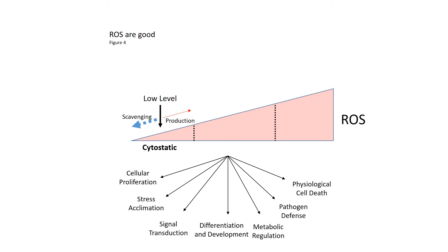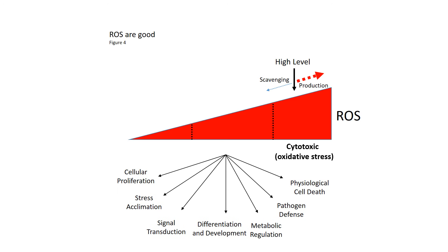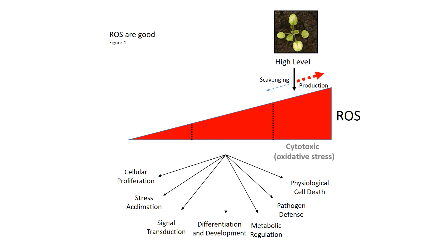If ROS levels are decreasing below a certain level, then due to the requirement of ROS for cellular proliferation, the cells will enter a cytostatic state and will not proliferate and therefore life cannot really go on. In contrast, if ROS gets too high into the cytotoxic or the oxidative stress range, then it can induce cellular injury.